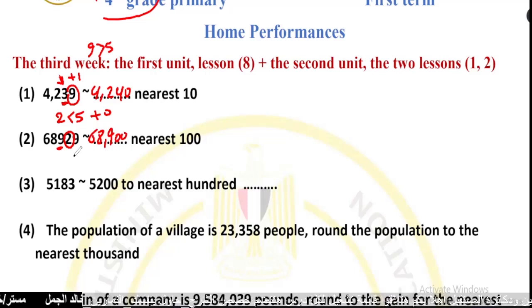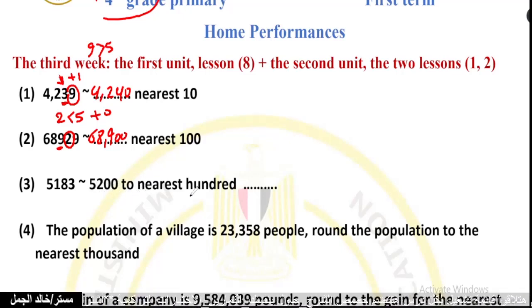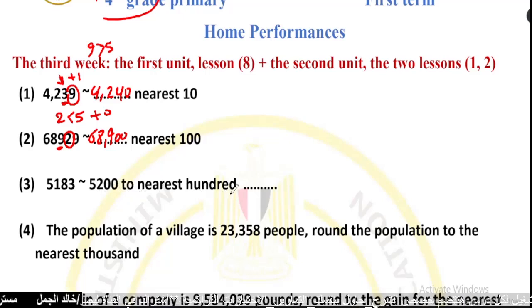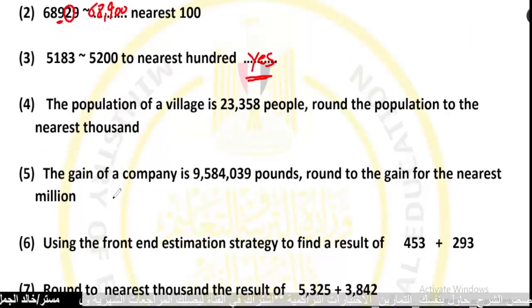Round 5,200 to the nearest hundred. The answer remains 5,200 when rounded to the nearest hundred.